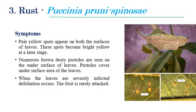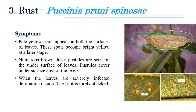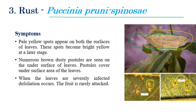Rust symptoms can be seen on both lower and upper surfaces of the leaf. Brown color dusty pustules, or brown to red color rust pustules, can be seen initially on the lower surface of leaves. Later, along with yellowing symptoms, these red or brown color pustules are surrounded by a yellow halo. On the upper surface, bright yellow or pale yellow color discolorations can also be observed, surrounded by brown color spots.